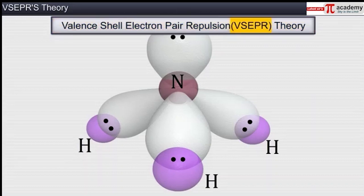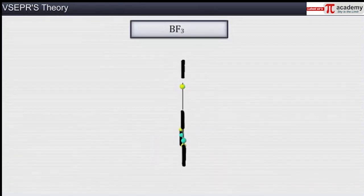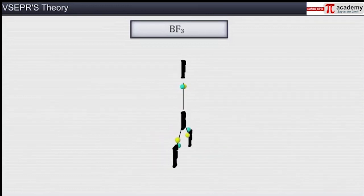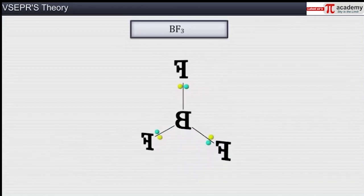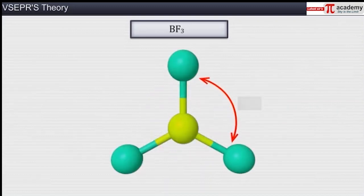This theory is named the Valence Shell Electron Pair Repulsion theory, or the VSEPR theory. It was further developed and redefined by Gillespie and Nyholm in 1957. The valence electron pairs surrounding the central atom in a molecule mutually repel each other, and thus arrange themselves in space in such a way as to minimize repulsions, giving the molecule a definite geometry.